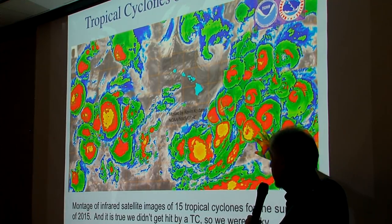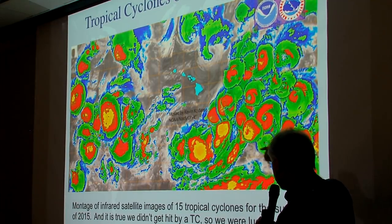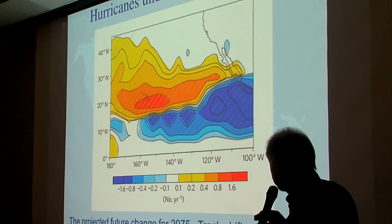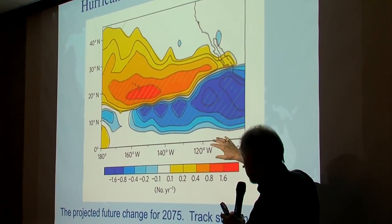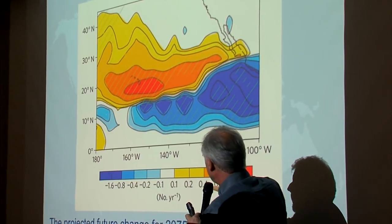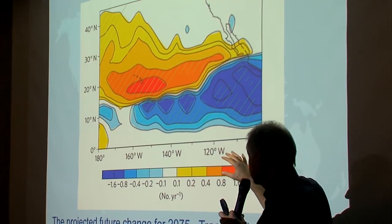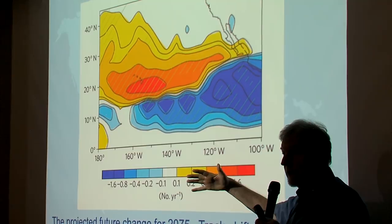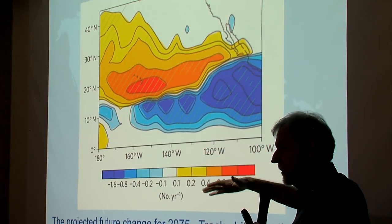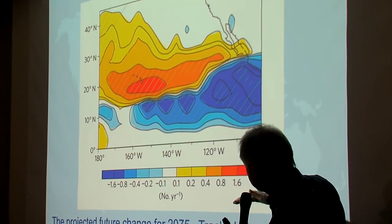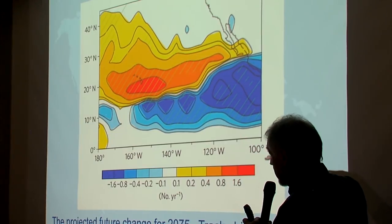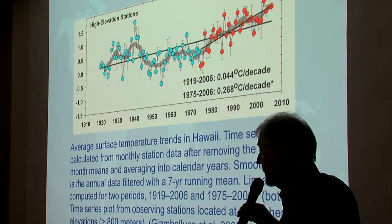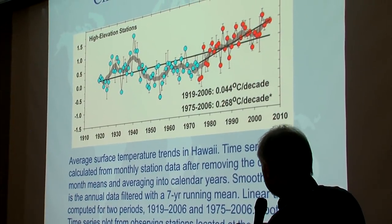During El Niño we had a lot of tropical cyclones in our vicinity — this mosaic put together by Kevin Kodama at the weather service shows 15 tropical cyclones swirling around us, some coming very close. By 2075, a study done in my department projects that we'll get about two more tropical cyclones passing near Hawaii than currently, because the maximum intensity of hurricanes is shifting slightly away from the poles with the warmer climate, pushing tracks a little further north.